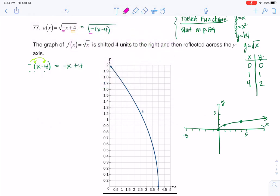So I do have this negative symbol here, but now I have a negative 4. So this negative 4 is going to shift us right 4 units. And this negative here is going to reflect our graph across the y-axis.